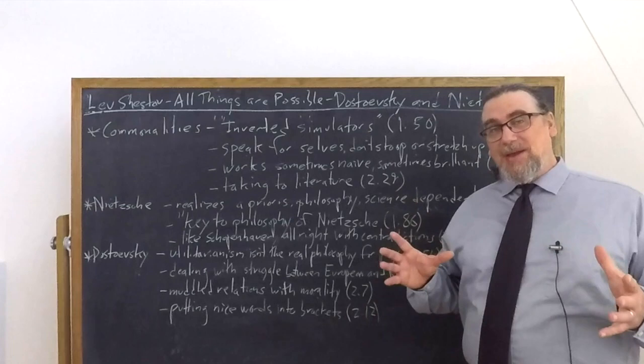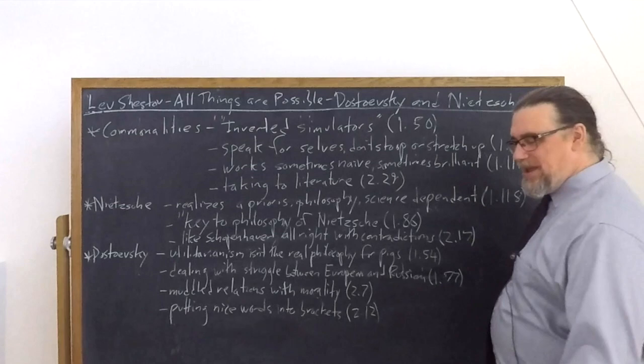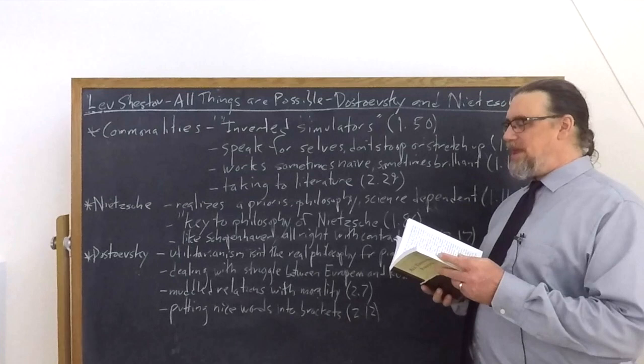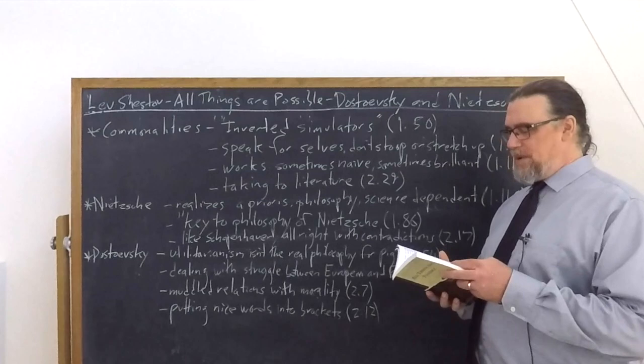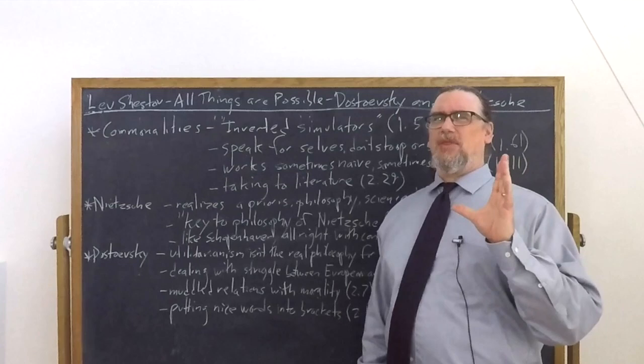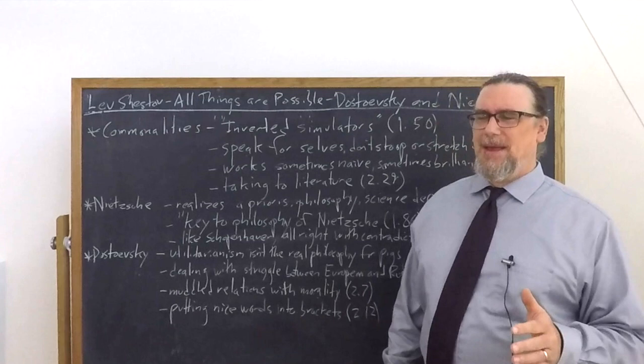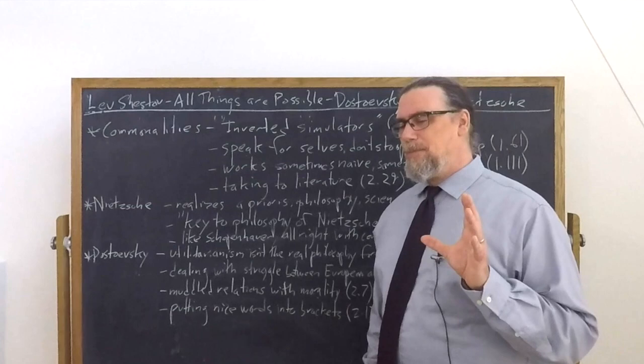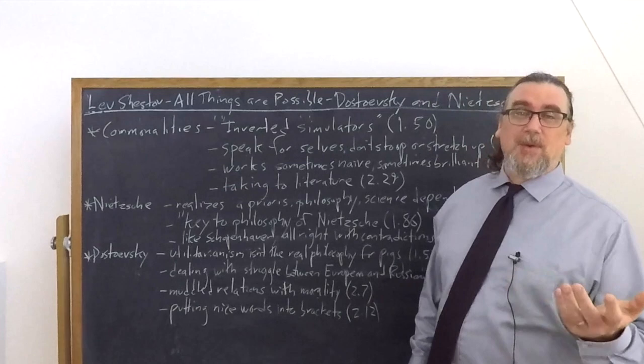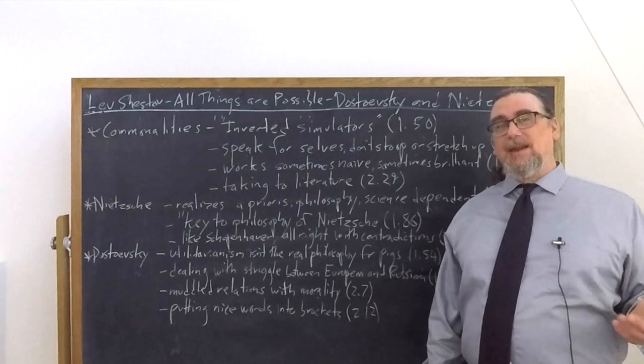The other thing that he suggests that's similar about these two is that they both take to literature. And they take to literature for a particular reason. And you might say, well, wait a second. Dostoevsky wrote literature. Nietzsche, okay, he wrote Thus Spoke Zarathustra, and that's literature, I guess. He did write some poetry as well. And he wrote some music, which is not particularly good music. But most of his work is philosophy, isn't it? Or philology, at least, what we would now call linguistics and classics. And yes, that's kind of correct. But if you look at his style, is it really straight-out philosophy? I mean, it's much more like Shestov and his form of writing.